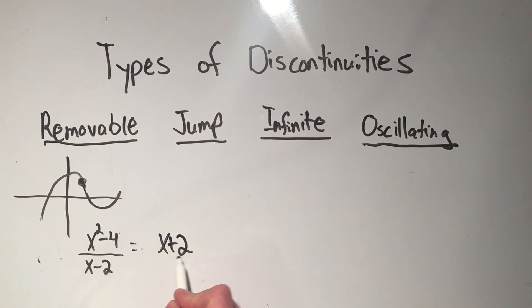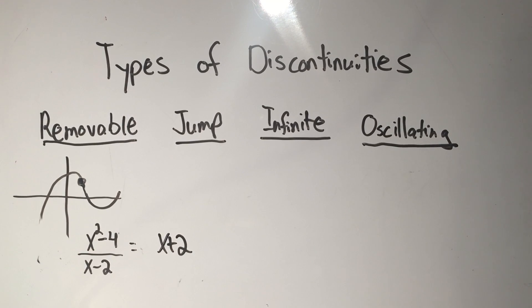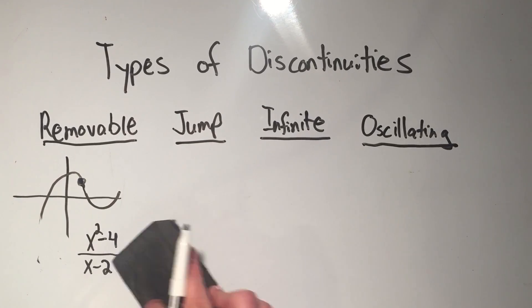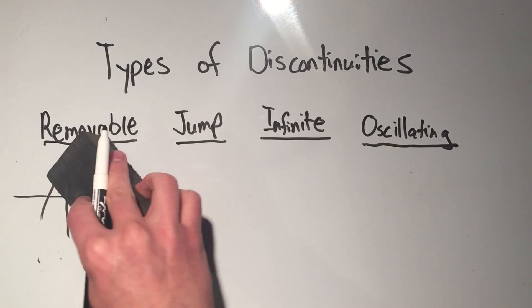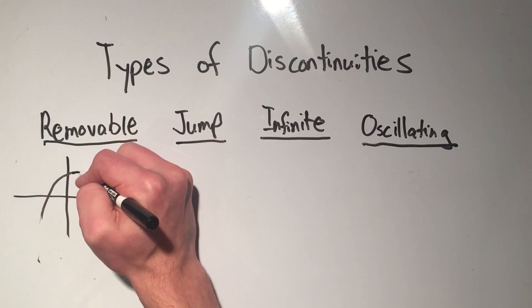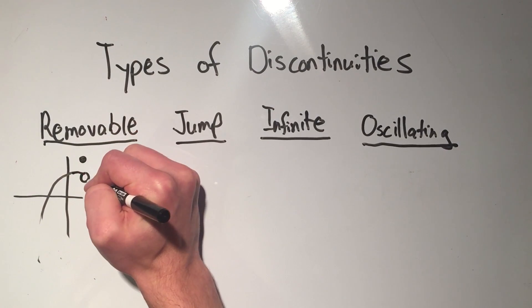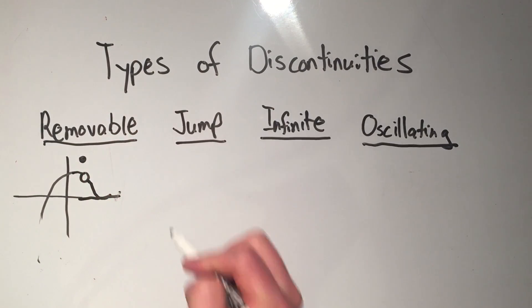And x plus 2, we know that's a line with slope 1 and y intercept 2. And a line is certainly continuous. There's no breaks or gaps in that function. So you can see that we removed that discontinuity from this function. Open hole and the hole somewhere else. That's what a removable discontinuity looks like.